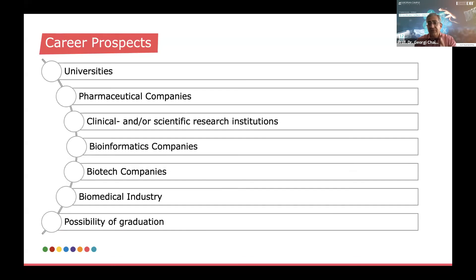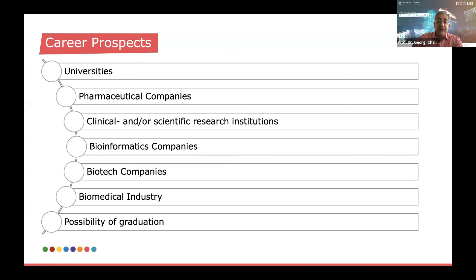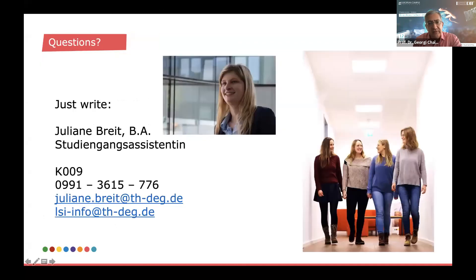The main career directions for graduates of the Master's in Life Science Informatics are in bioinformatics companies — those companies which do next-generation sequencing of the genome and find correlations between genome and diseases. But also any other biotech companies, biomedical industry, clinical or scientific research institutions, and pharmaceutical companies, as many of them are currently engaged in very active bioinformatics research. There is also, of course, the possibility to work in academia and universities, and even the possibility to engage in PhD-level research.